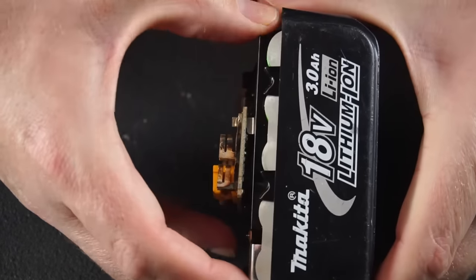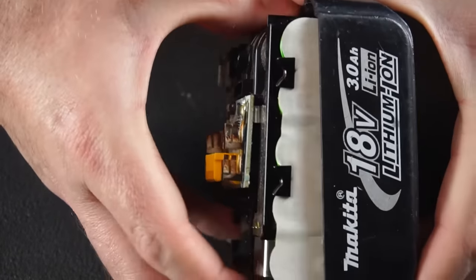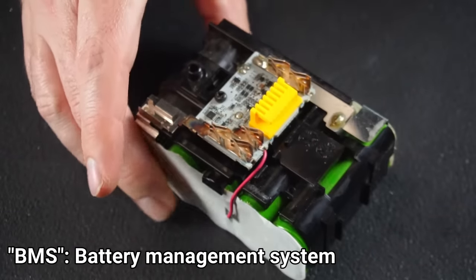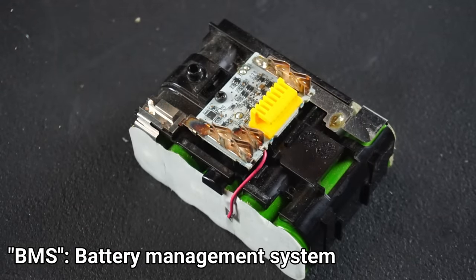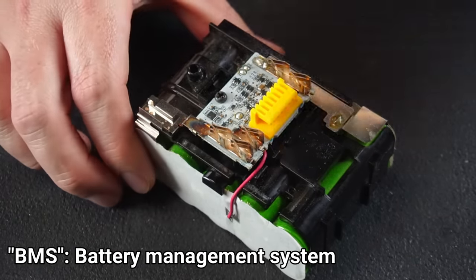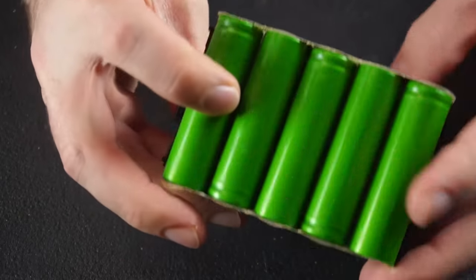The white circuit board on top of the pack is a type of BMS. It does several jobs such as monitor battery temperature and some models also feature balance charging, however this isn't one of them.